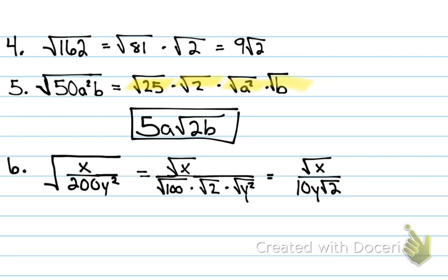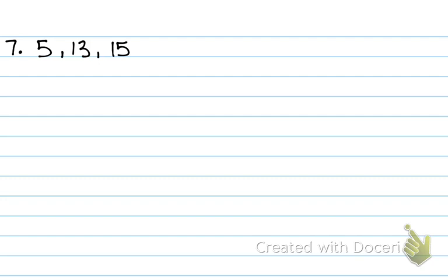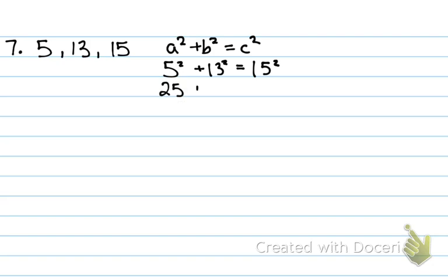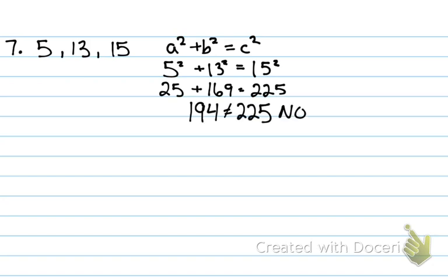Number 7: test whether these side lengths form a right triangle. You have two questions like this on your test. To test it, use the Pythagorean theorem: 5² + 13² equals 15²? What is 5² + 13²? It's 194. Does that equal 225? No. So you say no — it does not form a right triangle.